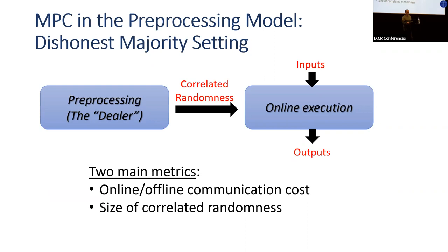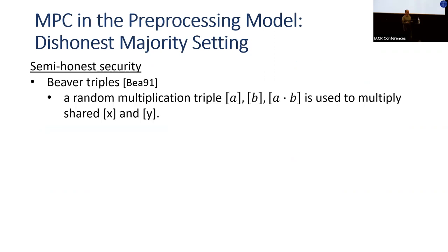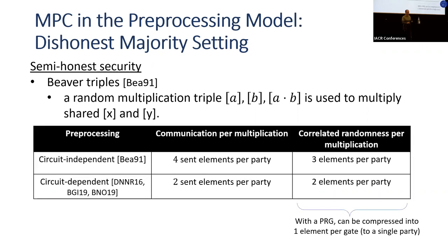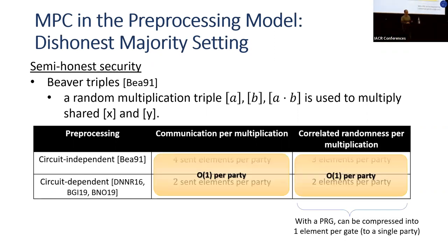The three main metrics considered for this model are the communication cost of the online and offline phases separately, and the size of the correlated randomness the parties need to store. The most popular example is Beaver triples, where the dealer gives the parties shares of random multiplication triples. The communication cost per multiplication gate per party is constant, so the overall communication grows linearly with the size of the circuit.